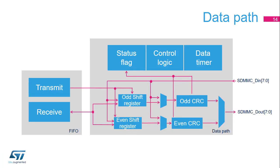The data path transfers data both to and from the SD, SDIO, or MMC card. In single data rate (SDR) mode, on each SDMMC CK clock cycle, the data path can send 1, 4, or 8 bits, depending on the bus width configuration.